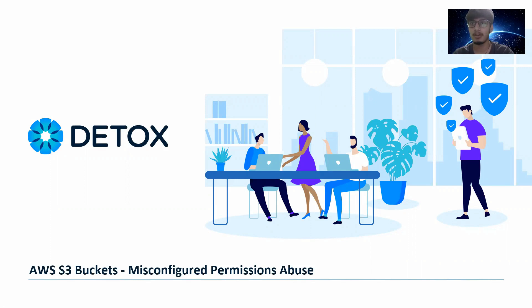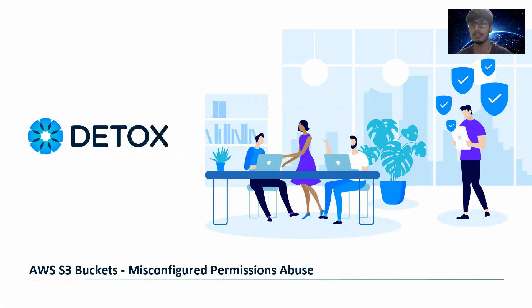In simple words, we are going to talk about what if the AWS account administrator forgot to properly implement the permissions and the role matrix for the S3 bucket options. Assume a scenario where a company is hosting some employees' personally identifiable information (PII) on an AWS S3 bucket, and that bucket is publicly accessible to any user. Any malicious hacker can simply access that bucket's endpoint and get hold of all the PII data of the employees.